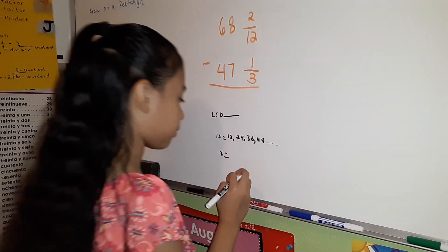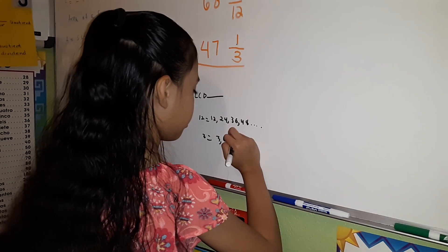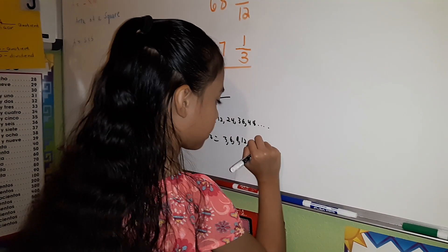The multiples of 3 are 3, 6, 9, 12, 15, and so forth.